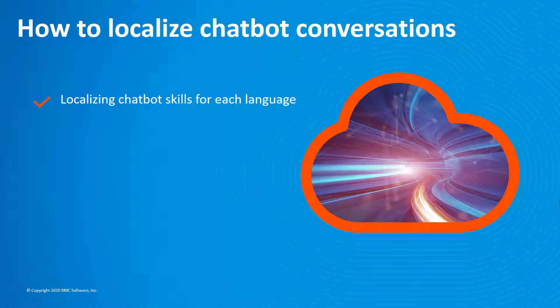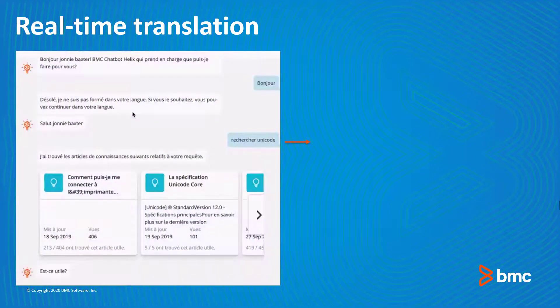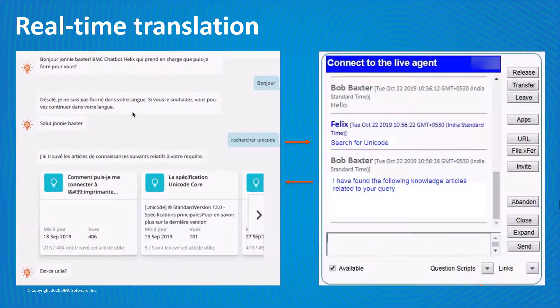Or, you can localize chatbot conversations by using the real-time translation feature, which does not require you to create one skill for each locale. Real-time translation, also known as RTT, instantly translates content from one language to another.